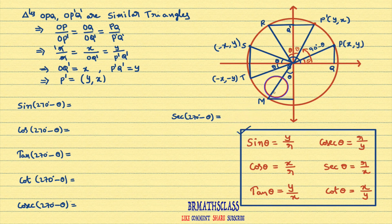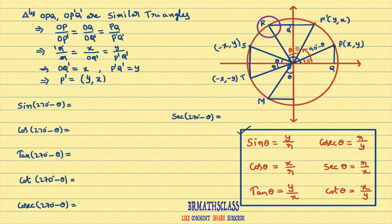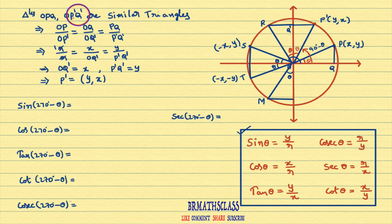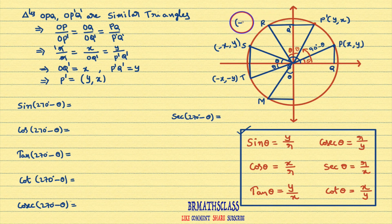Now, it is important we must get the coordinates of point M to find sin. To get the coordinates of point M, you must know the coordinates of point R. To get the coordinates of point R, you must know the coordinates of point P'. This we already discussed in previous classes. P' is in the first quadrant. That's why it is (y, x). R is in the second quadrant. In the second quadrant, we know that the x-coordinate is negative. That means this will become (-y, x). If the point P' is (y, x), then the point R is (-y, x).